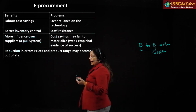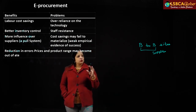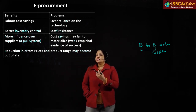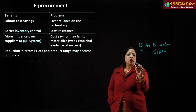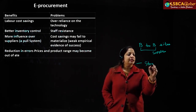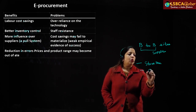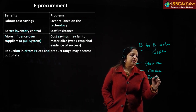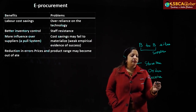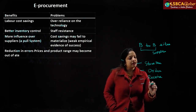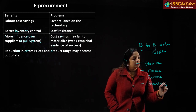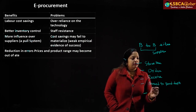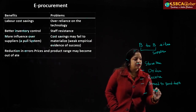Before understanding e-procurement, we should know about the purchase cycle. First of all, the storekeeper tells us the requirement, then we place the order, after ordering we receive the goods, then the materials are issued to the production department for work, and finally the manufacturing process starts.